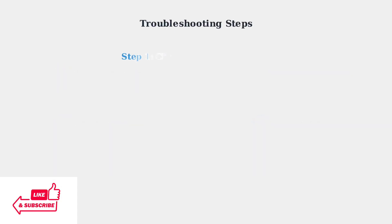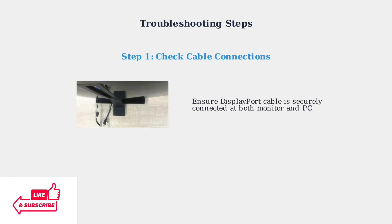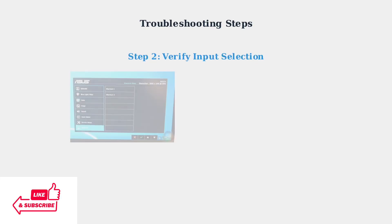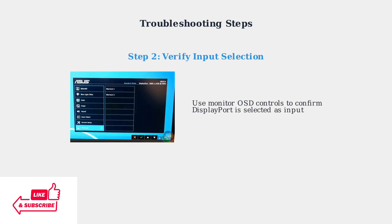First, check that your DisplayPort cable is securely connected at both ends. A loose connection is often the simplest cause of no-signal errors. Next, use your monitor's on-screen display controls to verify that DisplayPort is selected as the input source. Many monitors default to HDMI or other inputs.